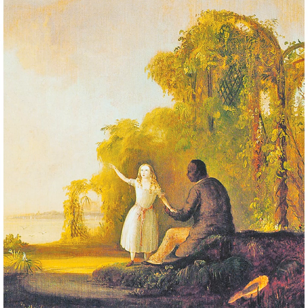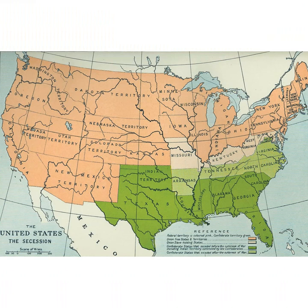After Abraham Lincoln is elected president in 1860, seven slave states break away — secede — to form the Confederate States of America. Lincoln refuses to recognize the Confederacy, declaring secession illegal.